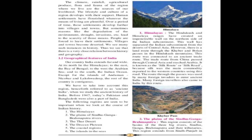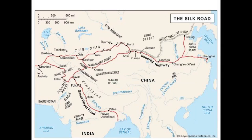The trade route from China passed through Central Asia and reached Arabia. It is known as the Silk Route or Silk Road. Silk was the main raw material exported to Western countries using this road. In ancient times, many foreigners came to visit India by using the Silk Road.